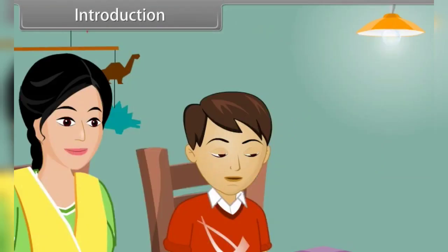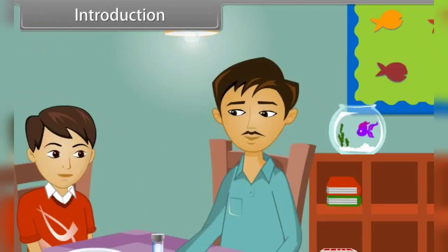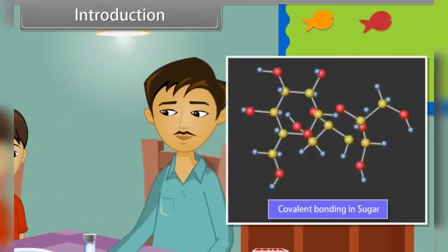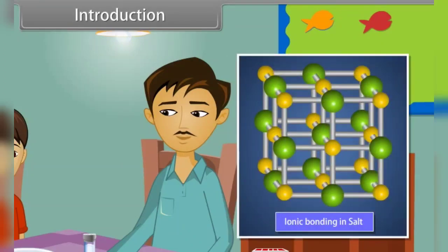Maybe due to different constituent particles? Son, your answer is right but not appropriate. I will tell you. Every structure depends upon the nature of chemical bonding between them. In sugar, there is covalent bonding in the molecules, whereas in salt, there is ionic bonding in the molecules.